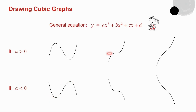At a stationary point the derivative is also zero. Now a cubic graph doesn't have an axis of symmetry like a parabola has, but it has a very interesting point in the middle.